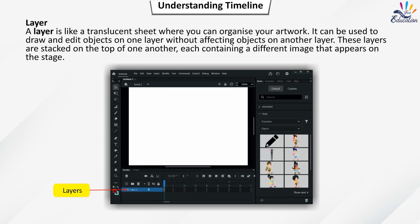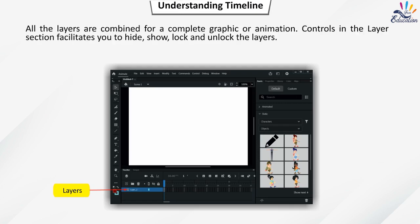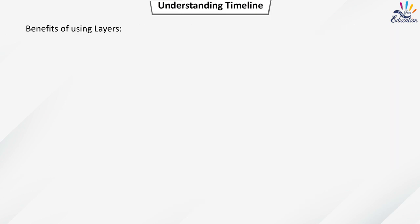A layer is like a translucent sheet where you can organize your artwork. It can be used to draw and edit objects on one layer without affecting objects on another layer. These layers are stacked on top of one another, each containing a different image that appears on the stage. All layers are combined for a complete graphic or animation. Controls in the layer section allow you to hide, show, lock, and unlock layers.